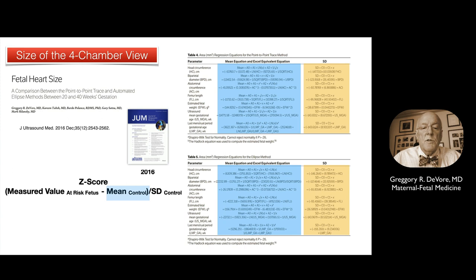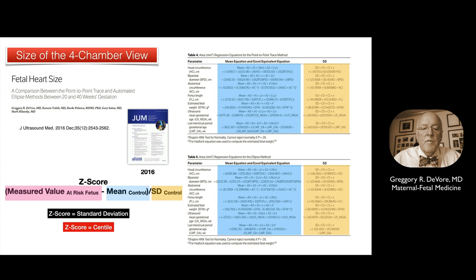The z-score is computed by subtracting the expected mean value from the measured value of the fetus at risk, then dividing by the standard deviation derived from the control group equations. The z-score is equivalent to the standard deviation and has an equivalent centile. For example, the 50th centile has a z-score of 0, the 5th centile has a z-score of minus 1.65, and the 95th centile has a z-score of 1.65. Computation of z-score values was used in many of the publications discussed in this presentation.